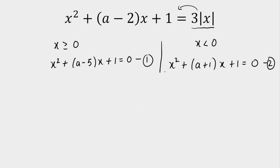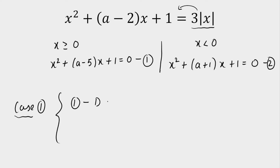From both quadratics, the condition is we have to get three distinct real roots in X. There are two cases. The first case: from the first quadratic equation, the maximum roots we can get is 2 and minimum is 0. So if we get discriminant greater than 0 from the first quadratic, that means we get two real distinct roots, let's say alpha and beta.